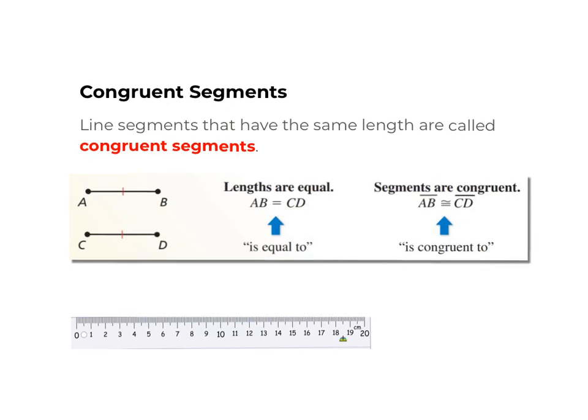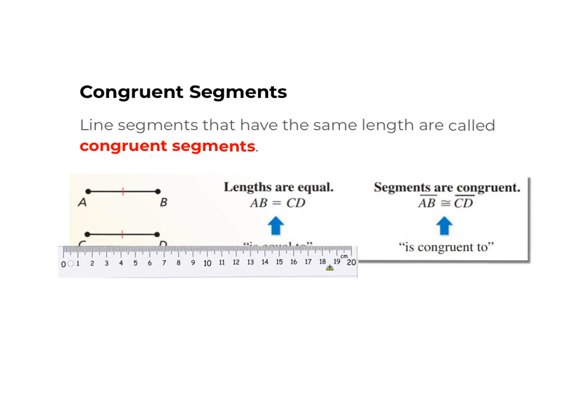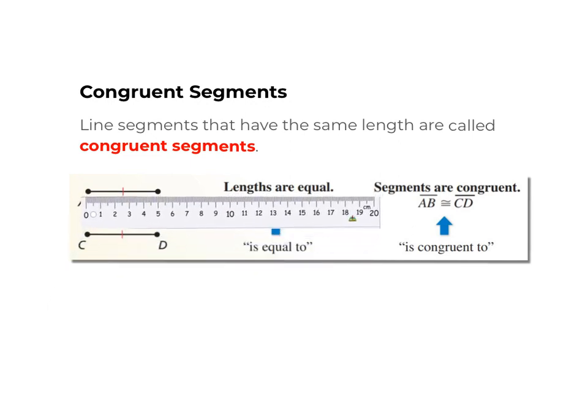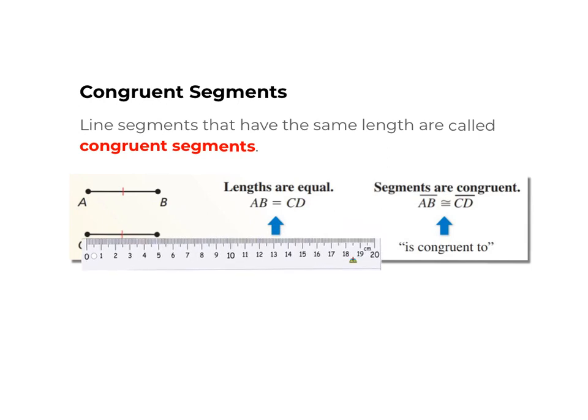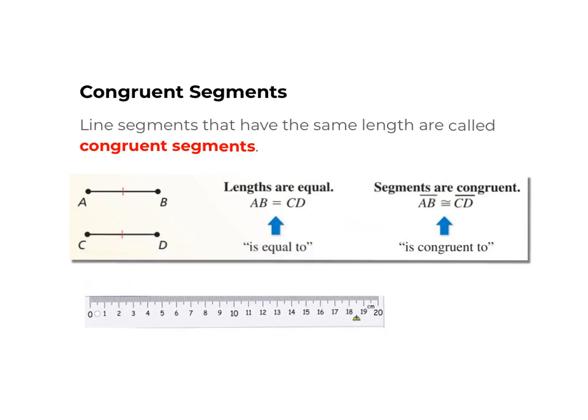We have two line segments here. We have a ruler that we can use to measure. Line segment AB is 5 centimeters long. Line segment CD is 5 centimeters long also.